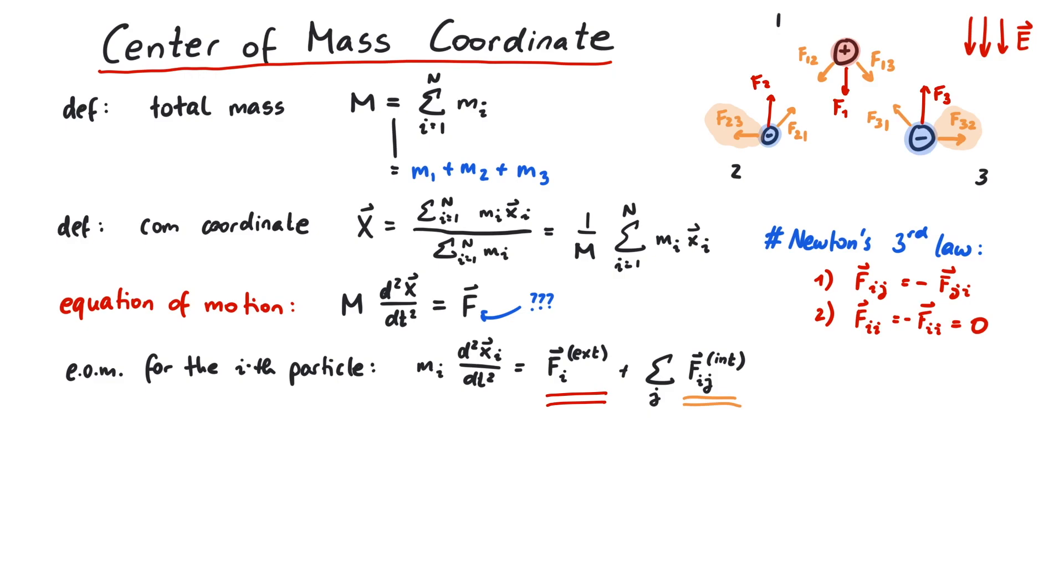So now that we theoretically know how every particle moves, let's go back to the center of mass. A trick to do this is to sum this equation over all i.